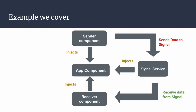My example has a sender component and a receiver component, both injected at the app component level. There is also a signal service, injected at the app level so it can be used by both sender and receiver. I'll create buttons in the sender component to send data into the signal service and update the signal. When the signal updates, the receiver component should automatically receive that data.